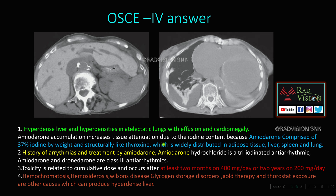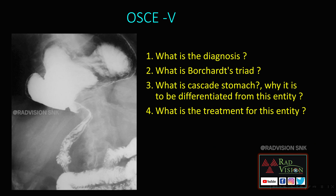The specific history to ask is history of arrhythmias and treatment with amiodarone, which is a Class 3 anti-arrhythmic drug. Toxicity is cumulative, occurring at least two months on 400 mg/day or two years on 200 mg/day. Other causes of hyperdense liver include hemochromatosis, hemosiderosis, Wilson's disease, glycogen storage disorders, gold therapy, and Thorotrast exposure.